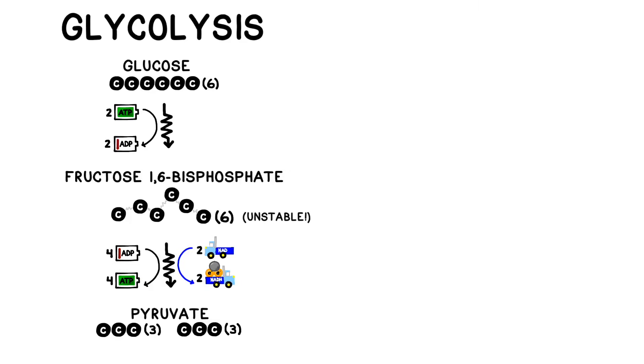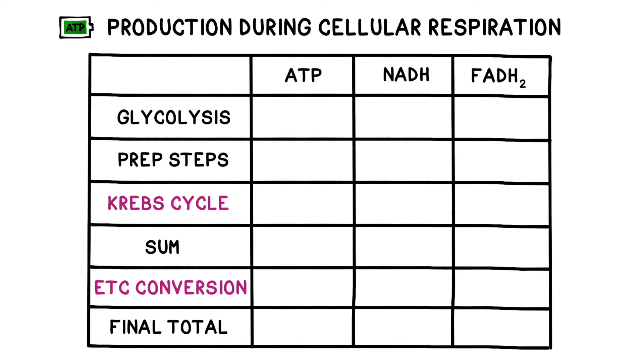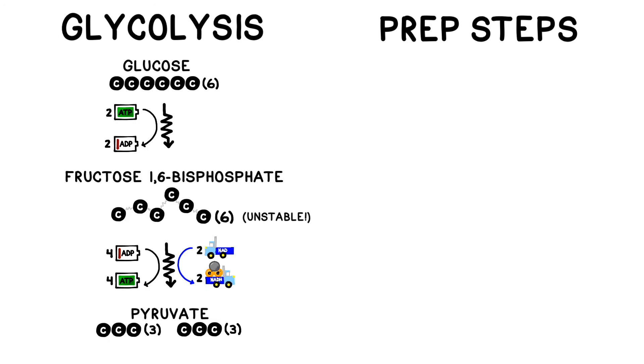Cellular respiration also uses another mobile electron carrier called FADH2. In summary, we started with one glucose molecule and broke it into two pyruvate and also recharged two NADH. It's often really useful to keep score as we go through the reactions. As we progress, we'll be updating a chart that looks like this. So far, we made four ATP and spent two, then we recharged two molecules of NADH and zero FADH2. Next up, we have the prep steps.